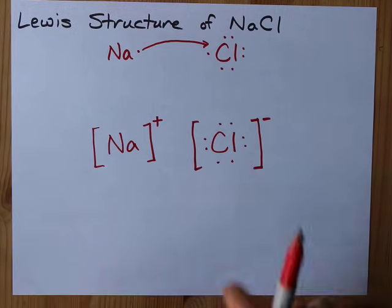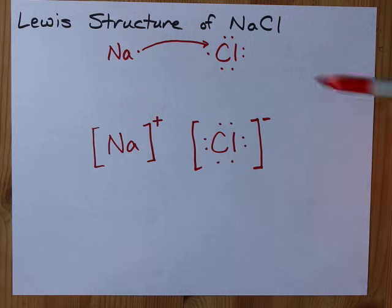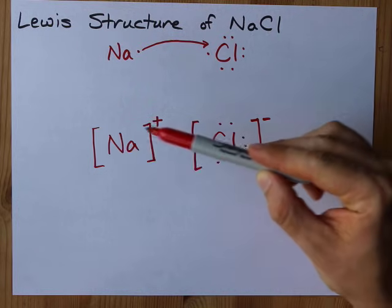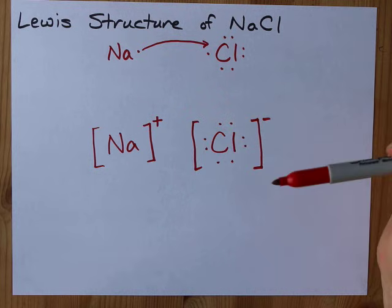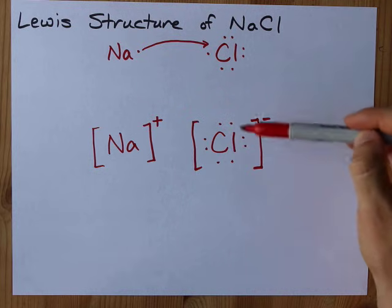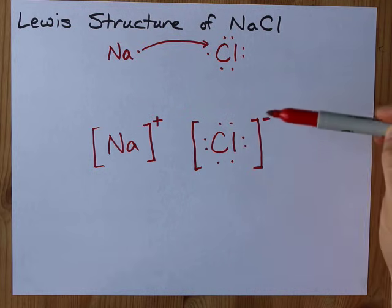This is the final Lewis structure for NaCl. Show the metal atoms with no electrons and their positive charges. Show the non-metals with their completed octets and their negative charges.